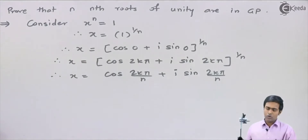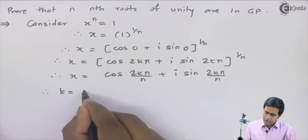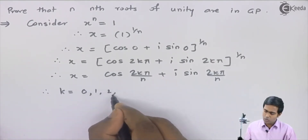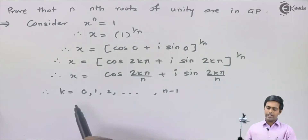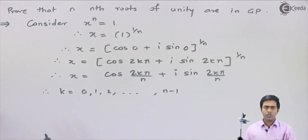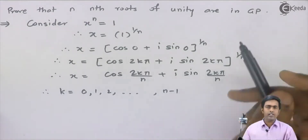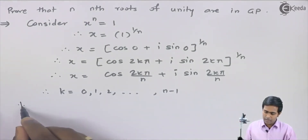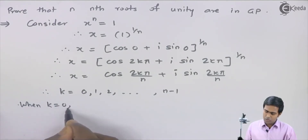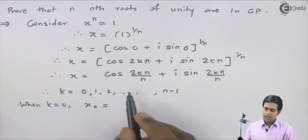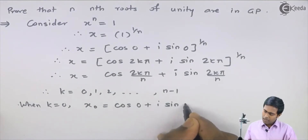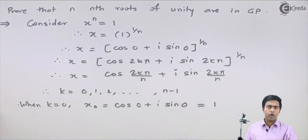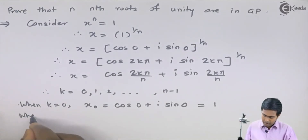We need to find n roots, so we take n values of k. We always start with k = 0 and go up to k = n − 1. Substituting each value will give us all the roots. When k = 0, the term becomes 0, so we get x₀ = cos(0) + i·sin(0) = 1.